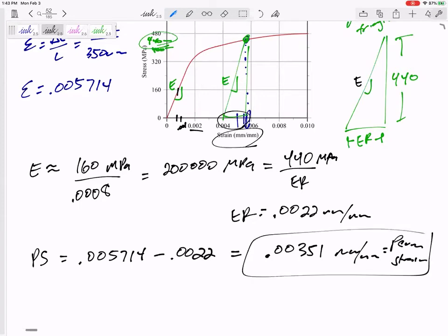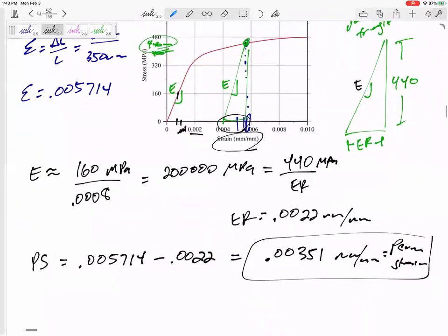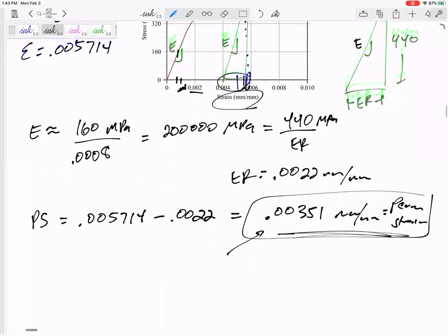And so part A, permanent set, that's what it's asked for, permanent strain. Part B, what is the length of the unloaded bar? So it was 350, but I know I have a permanent deformation of .00351 millimeters per millimeter. Let me change that to actual length. How many millimeters is that? I need to multiply it times the original length. This is a strain. A strain is delta L over L.